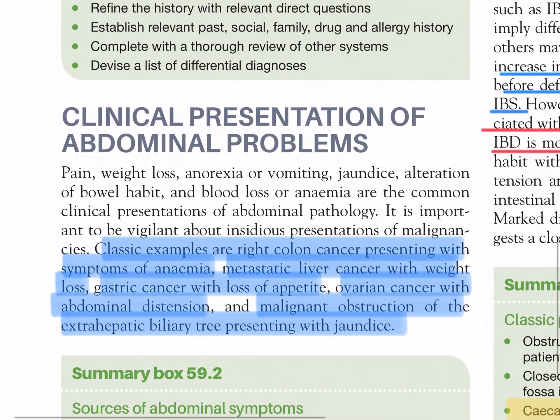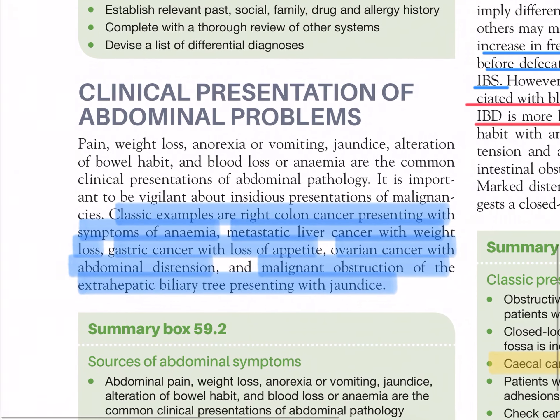Clinical presentations of abdominal problems: pain, weight loss, anorexia or vomiting, jaundice, alteration of bowel habit, and blood loss or anemia are the common clinical presentations of abdominal pathology. It is important to be vigilant about insidious presentations of malignancies. Classic examples are right colon cancer presenting with symptoms of anemia, metastatic liver disease with weight loss, gastric cancer with loss of appetite, ovarian cancer with abdominal distension, and malignant obstruction of the extrahepatic biliary tree presenting with jaundice.